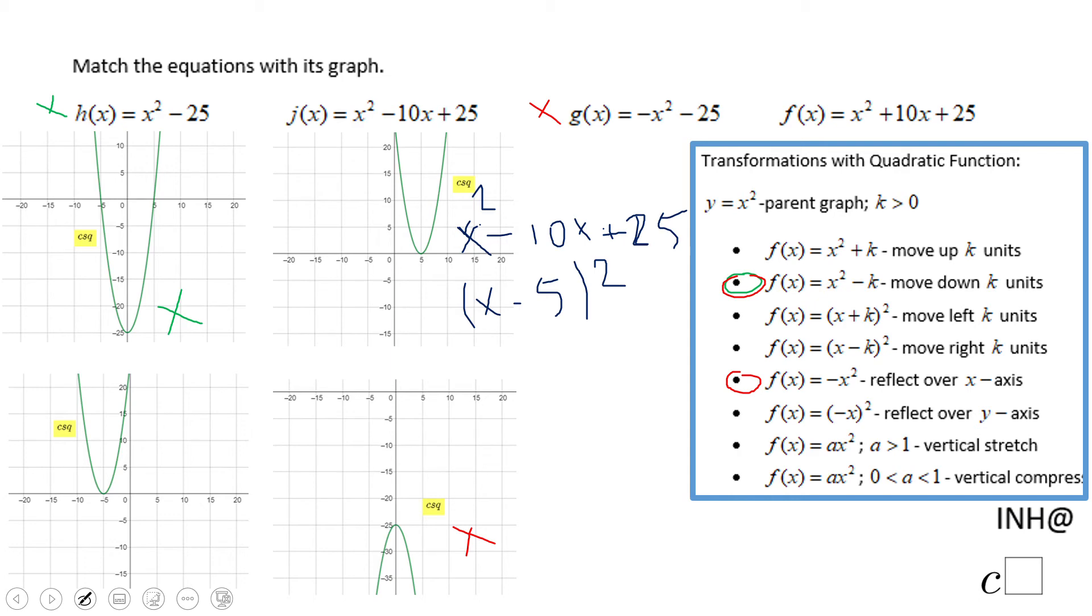This second form, (x - 5)², tells us the graph moves right 5 units, which means this is the correct graph. We have one more.